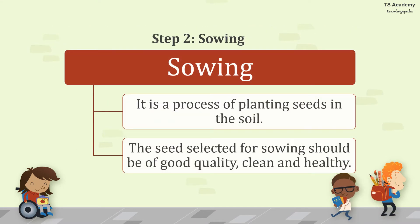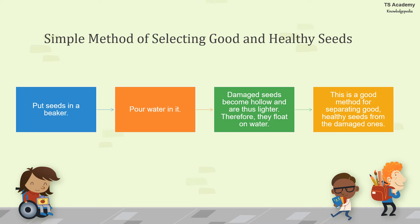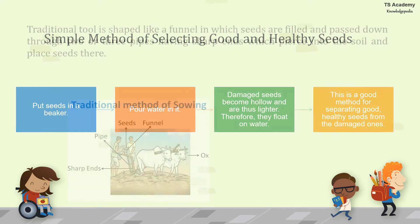Next is sowing. Sowing is the process of planting seeds in the soil. The seeds selected for sowing should be of good quality, clean and healthy. A simple method of selecting good and healthy seeds: put the seeds in a beaker and pour water in it. Damaged seeds become hollow and float on water, while healthy seeds rest at the bottom. This is a good way of separating healthy seeds from damaged ones for use in sowing.